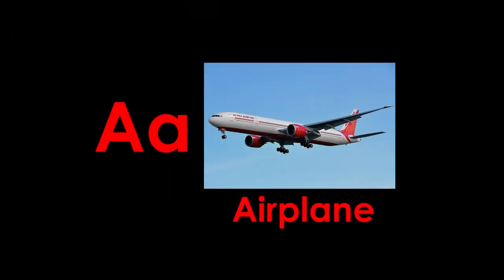A is for airplane. Kansans began making and flying airplanes not long after the airplane was invented. We made so many airplanes here that Wichita, Kansas became known as the air capital of the world. Airplanes are still made in Wichita today.